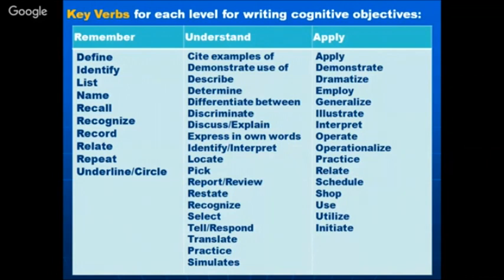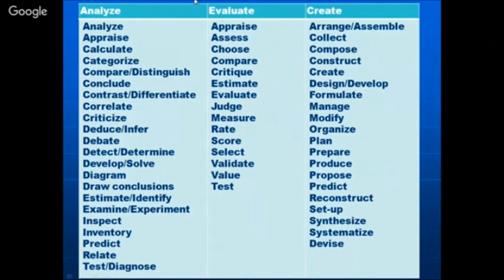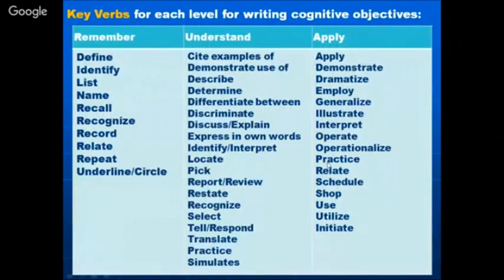If your objective is that the student will be able to understand, you use action verbs like: cite examples, demonstrate use of, describe, determine. There is a whole list. Similarly, if the instructional objective is at the level of application, there are corresponding action verbs to use when writing the learning outcome of the topic or course. In a diploma course, we generally go to the level of understanding and application in most subjects.